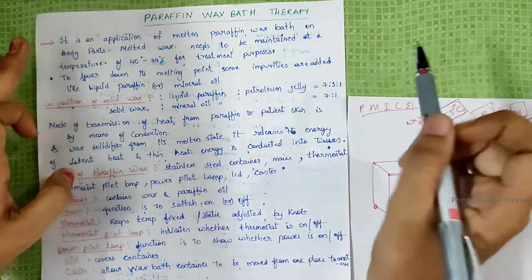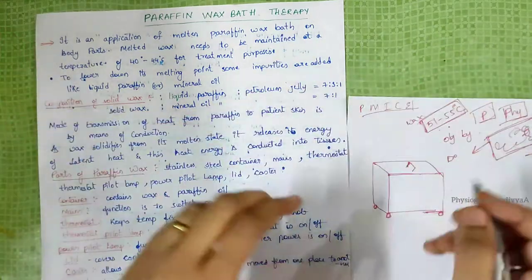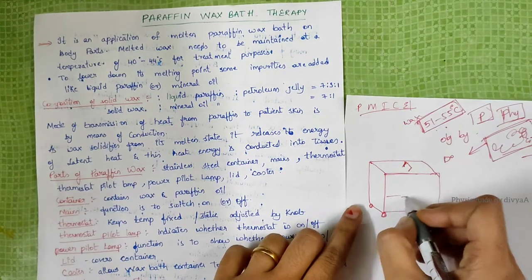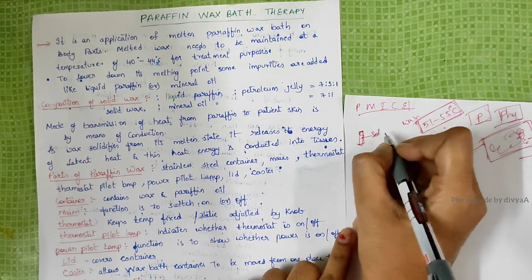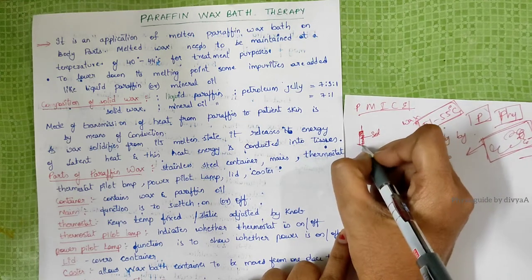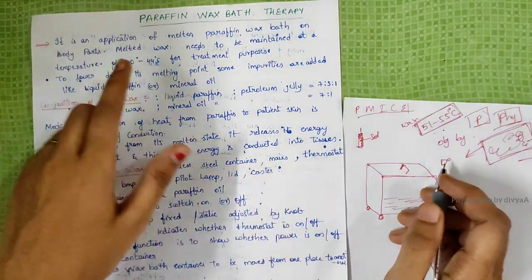Paraffin wax bath therapy is used by a physiotherapist for treatment purposes. This wax bath is solid wax, like a candle in solid state. If we melt it, it will become liquid state, so it all depends on that wax.